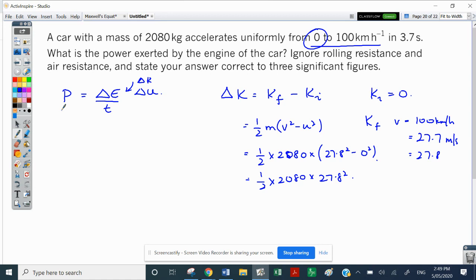So now calculating power, power would be the change of energy, which is a half times 2080 times 27.8 squared, all over the time taken, which is 3.7 seconds. So this is the joules on the top. This is the change in joules. And this is the time on the bottom. So this is joules per second.